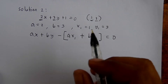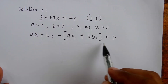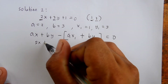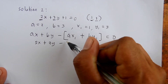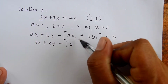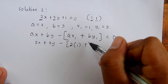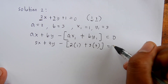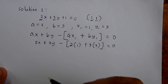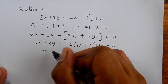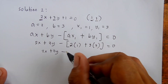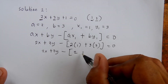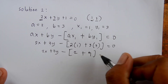Using the given values, we substitute. So a is 2: it becomes 2x plus 3y minus the quantity of 2 times x sub 1 which is 1, plus 3 times y sub 1 which is 3, close bracket equals 0. Then copy 2x plus 3y minus, simplify: 2 times 1 is 2, plus 3 times 3 is 9. Close bracket equals 0.